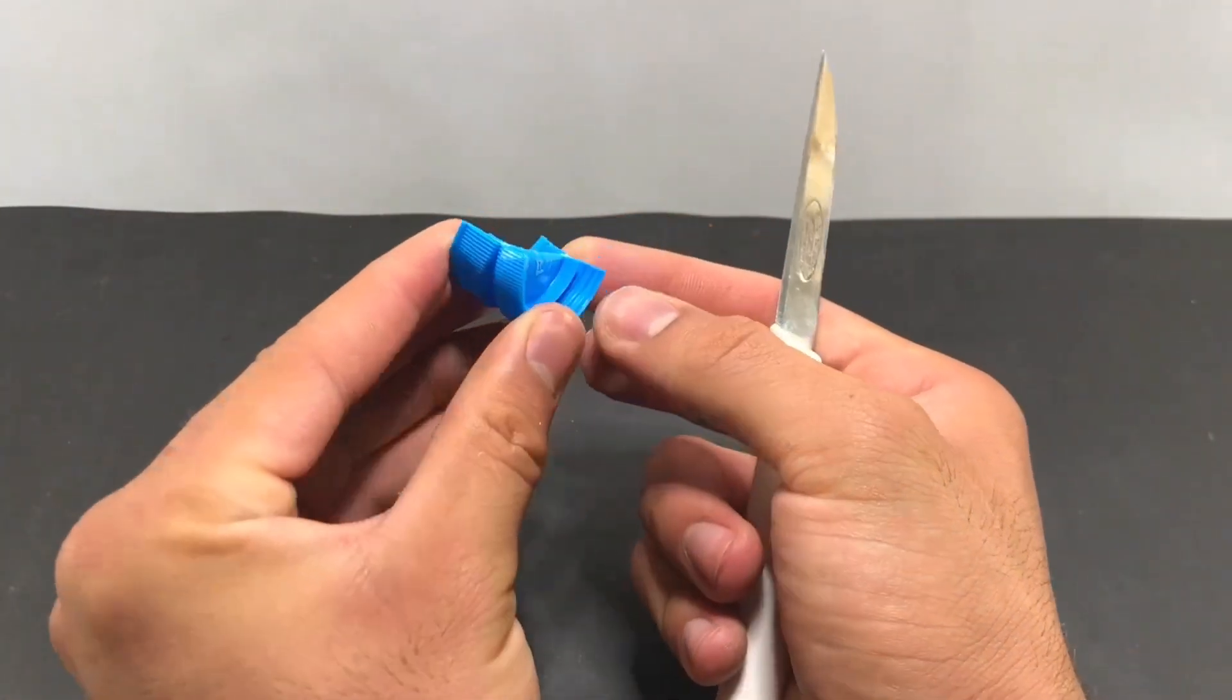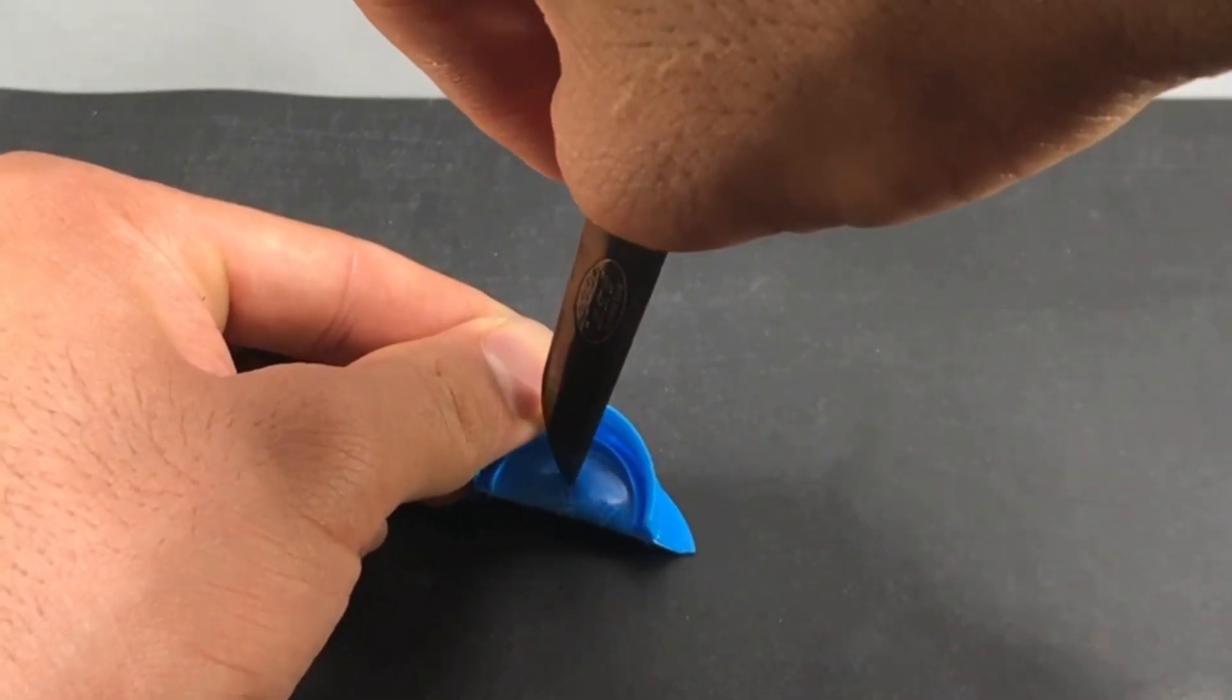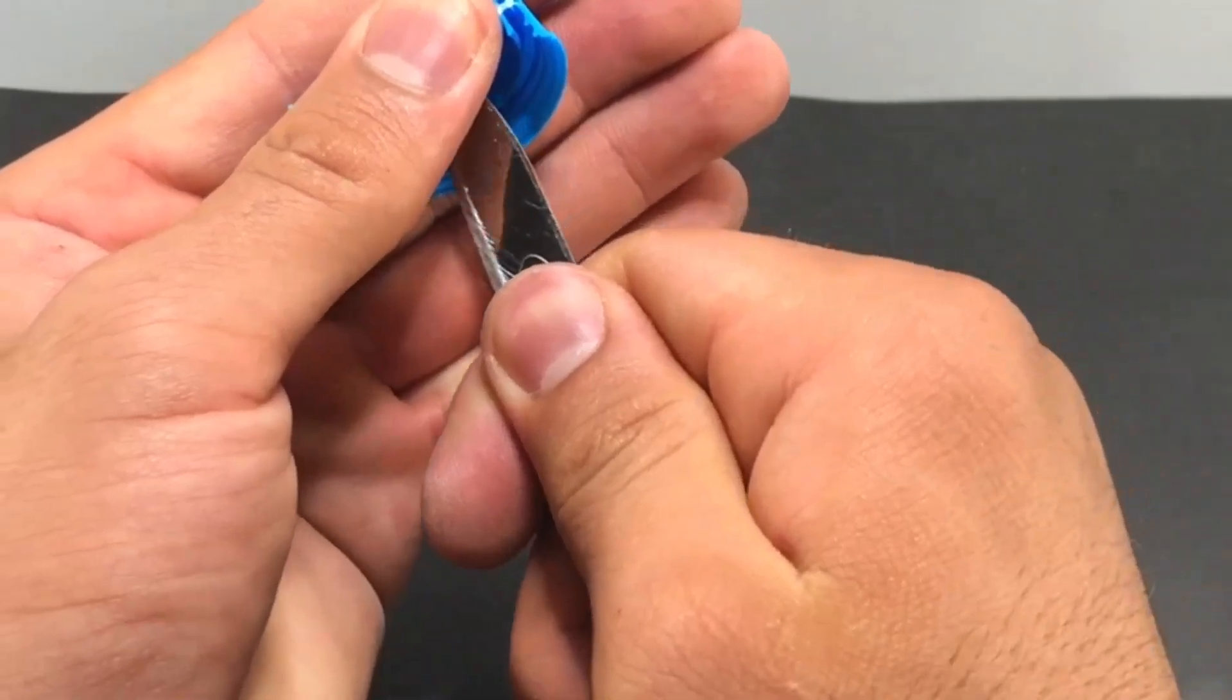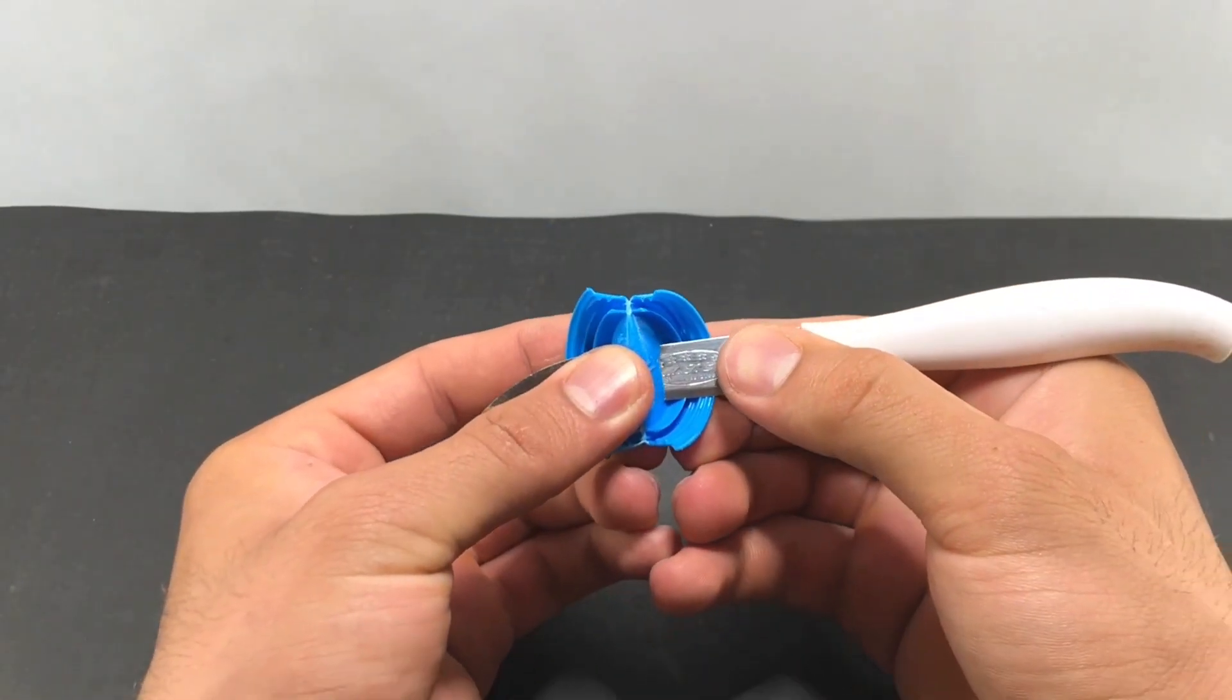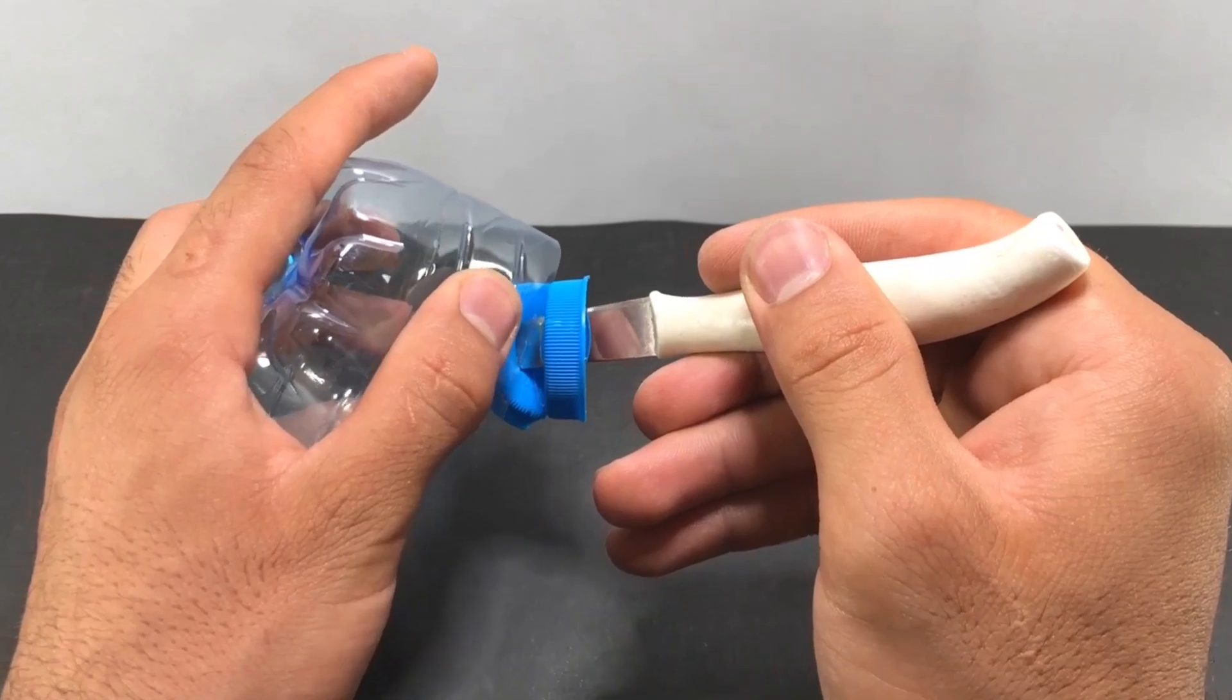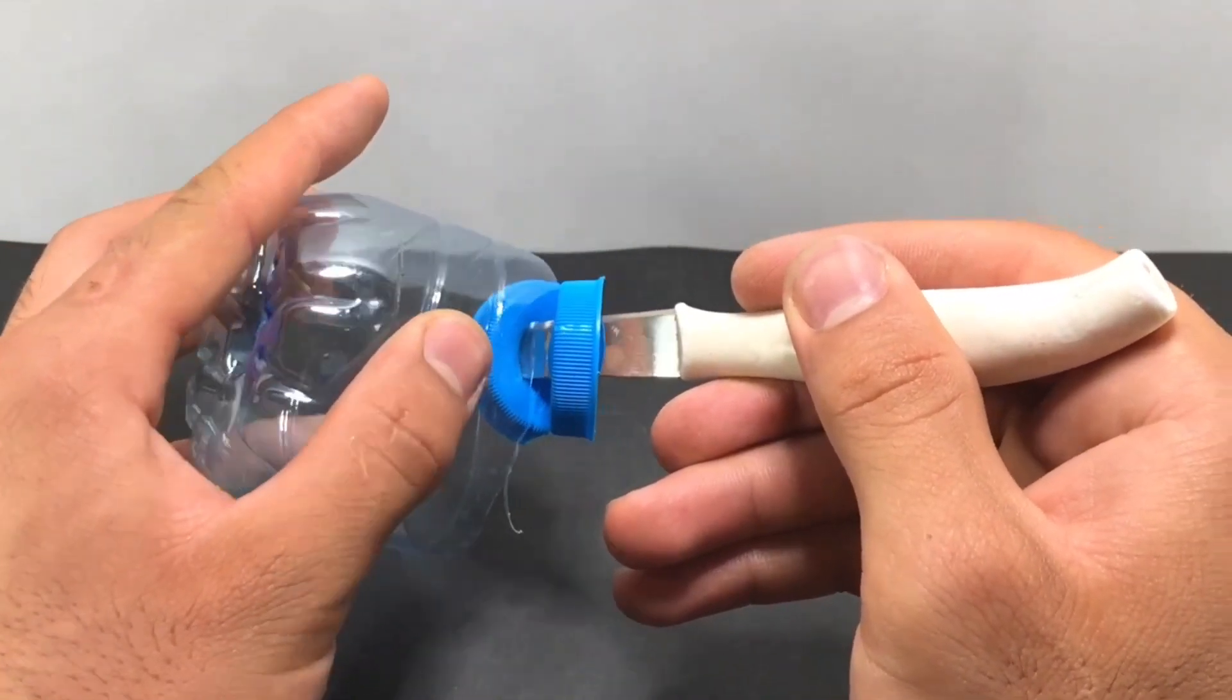We bend the bottle cap that we cut in half and pass the knife through the middle like in the video. And we pass the bottle through the middle of the cap to cut some of the bottle with a knife.